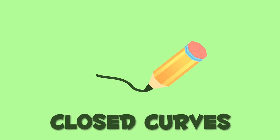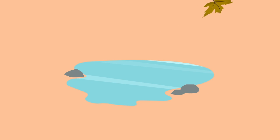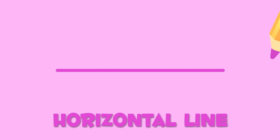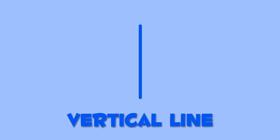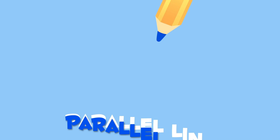Closed curves are like this pond or this ketchup stain. Let's recap: horizontal line, vertical line, oblique line, parallel lines, perpendicular lines.